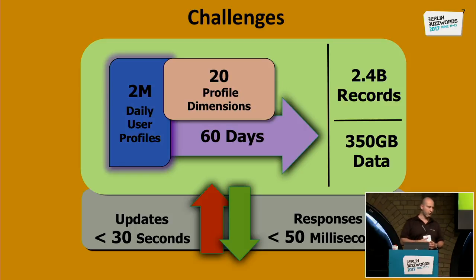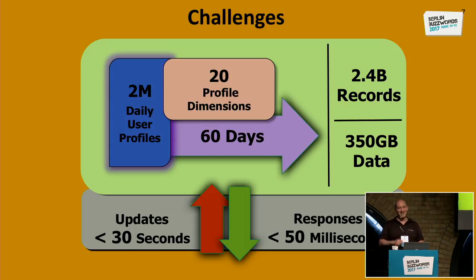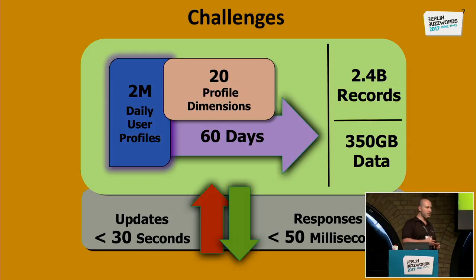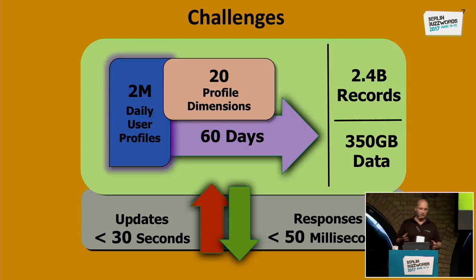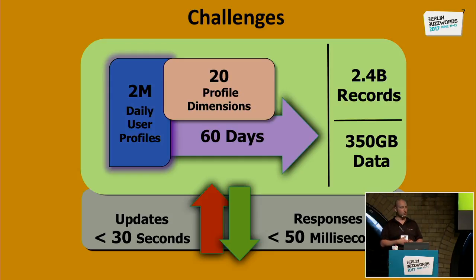Why the daily approach? Simply because we want to give the flexibility to our stakeholders - the users of the user profile service - the option to say: I want a user profile based on the last 10 days, or the last 20 days. We also want to give them the flexibility to apply different decay functions between those daily profiles - maybe we'd like to boost data from the last week more than what happened in the last month. So if you do a small calculation: 2 million profiles × 20 dimensions × 60 days gives you approximately 2.4 billion records, which is approximately 350 gigabytes of data.